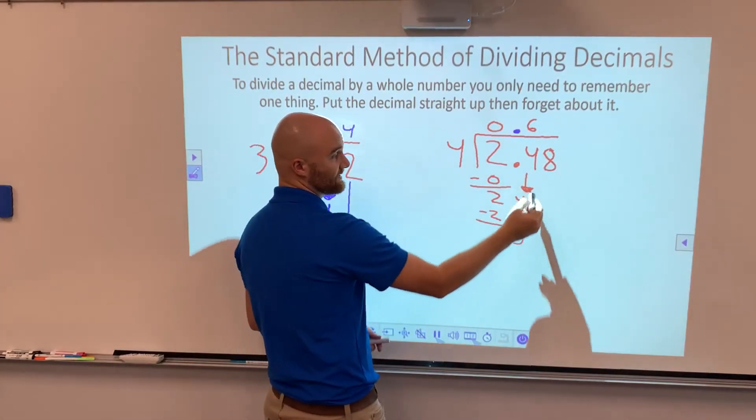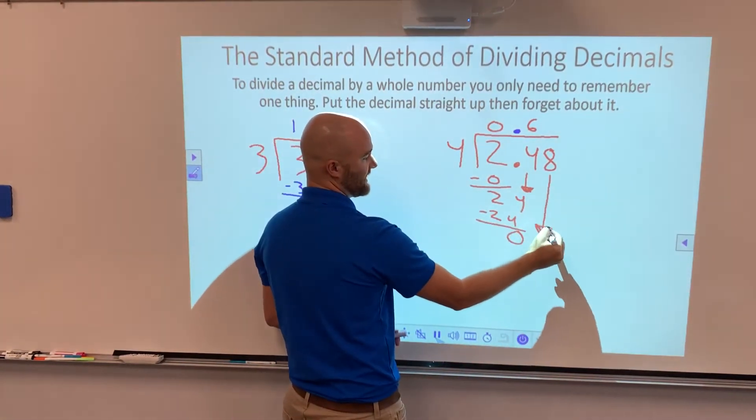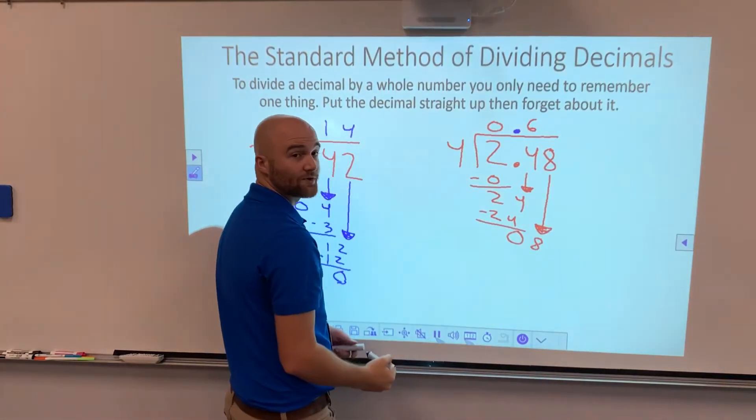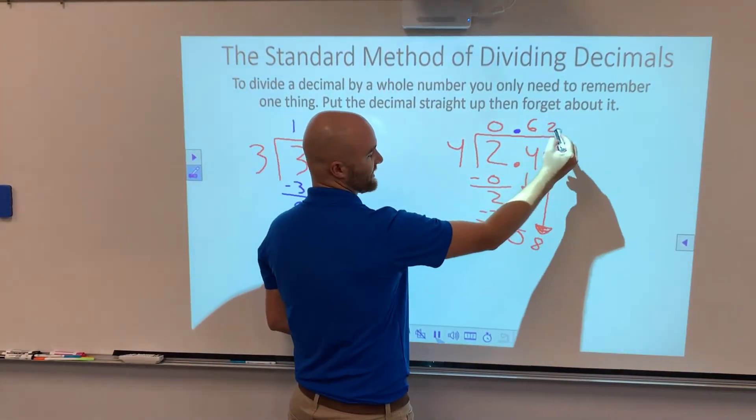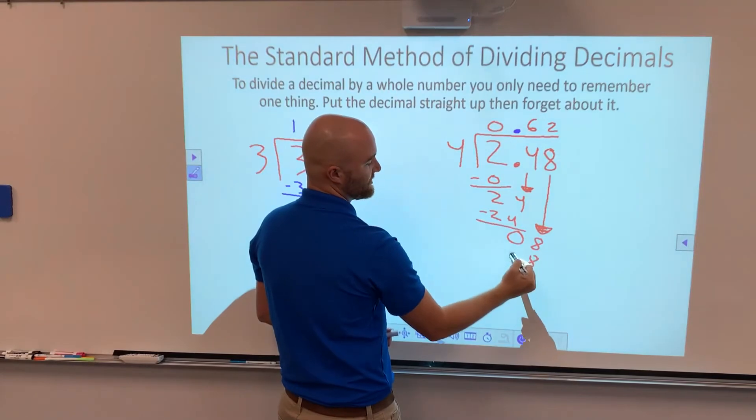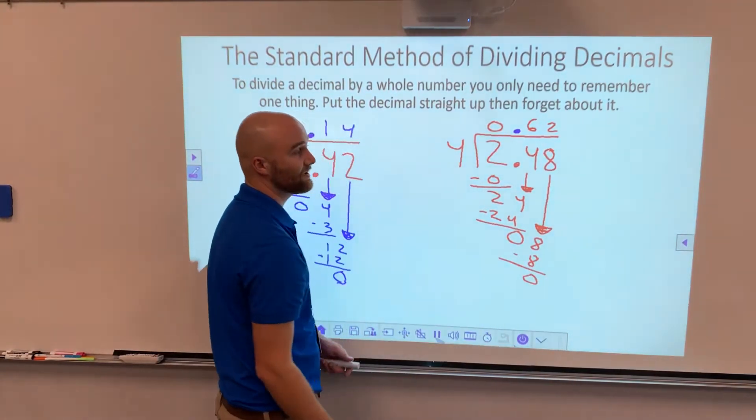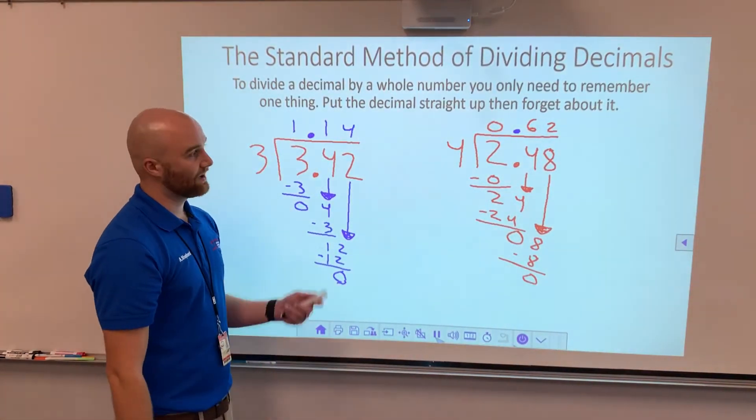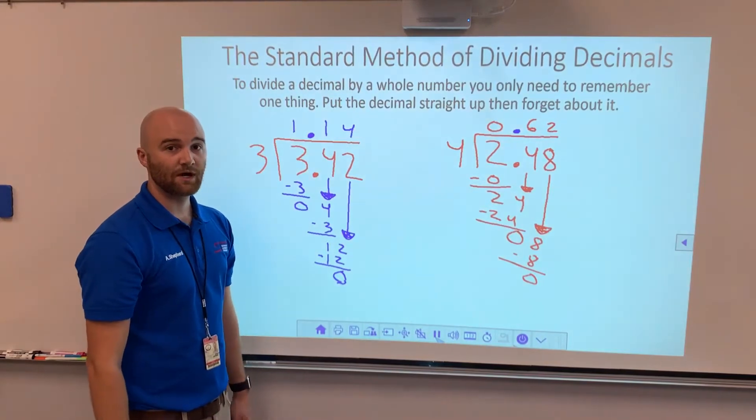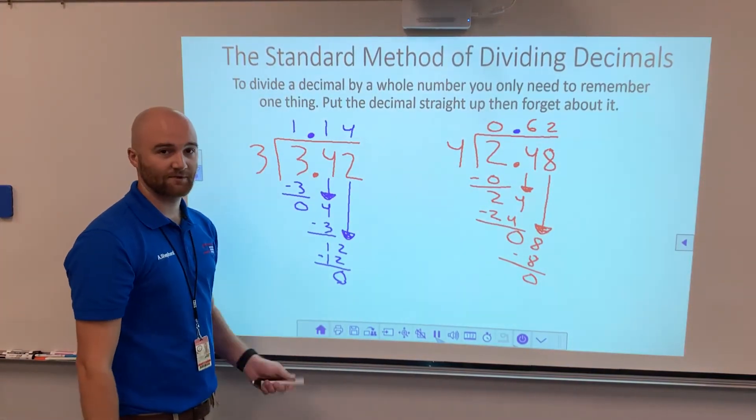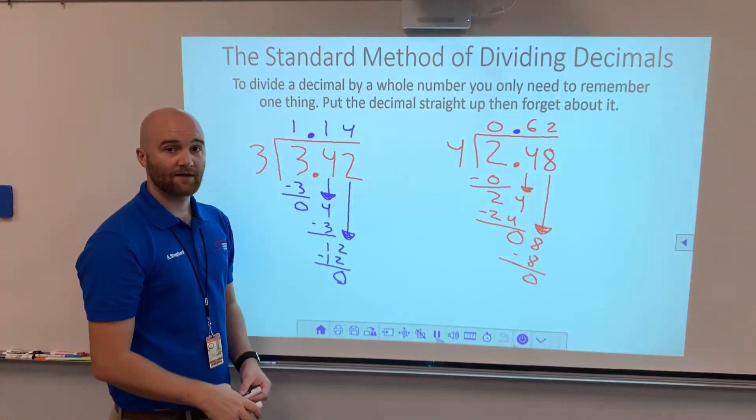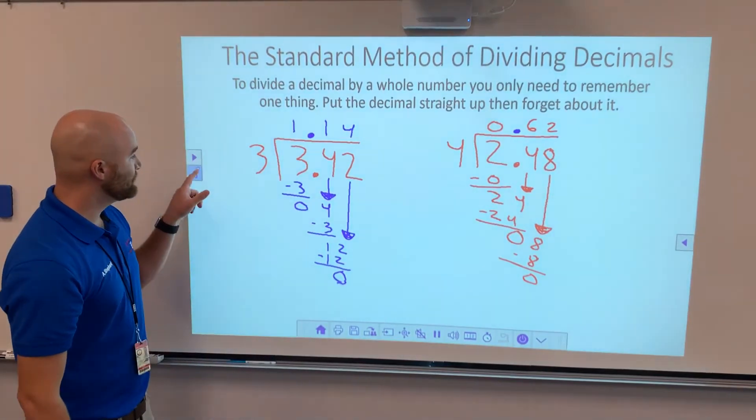I can't stop because I still have stuff to bring down. I bring this 8 down. 4 goes into 8 a total of 2 times. 4 times 2 gives us 8. We do our subtraction. Because I have 0 and nothing left to bring down, our answer is 62 hundredths. It's as easy as that. I put the decimal straight up and I forget about it.